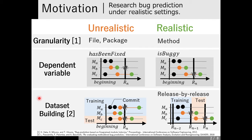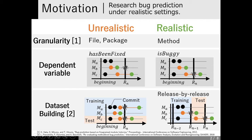Third, dataset building. In some papers, datasets are built like this figure. It proceeds as follows: first, we calculate records for each module at release end, and next we split them into training dataset and test dataset. This technique provides unrealistic results, because modules A, B, and C are in the same target project, and in a real use case, is-buggy of module A and B cannot be calculated when predicting is-buggy of module C at release end.